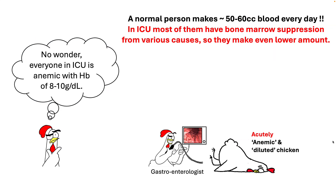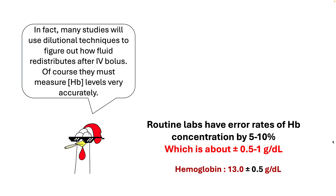Since a normal person makes about 50 cc's of blood every day, and this number is much lower in sicker patients due to bone marrow suppression from inflammation and acute stress, you can see why most ICU patients become anemic. The other factor to remember is the error rate of the lab when measuring hemoglobin — on the order of 5 to 10%, giving a range of plus or minus 0.5 grams per dL. So if you see a hemoglobin of 13, it really means the true hemoglobin ranges between 12.5 and 13.5.